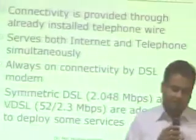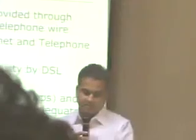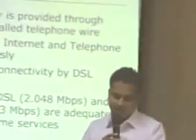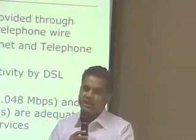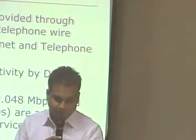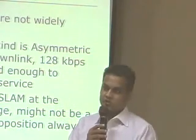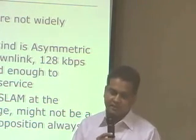DSL comes in several types. Symmetric DSL, or SDSL, provides the same speed for both uplink and downlink — that is 2.048 Mbps. There is another type called Very High Speed DSL, or VDSL, which can give 52 Mbps downlink and 2.3 Mbps uplink. However, both SDSL and VDSL are not widely deployed. The most deployed kind of DSL is Asymmetric DSL, or ADSL, which gives only 1.5 Mbps downlink and 128 kbps uplink.